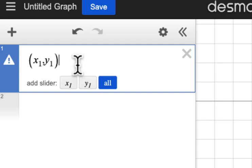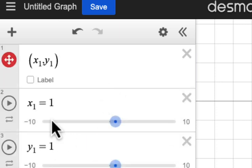You'll be asked if you want to create sliders for x1 and y1. You do, so click the All button. You'll see two sliders, one for x1 and one for y1.